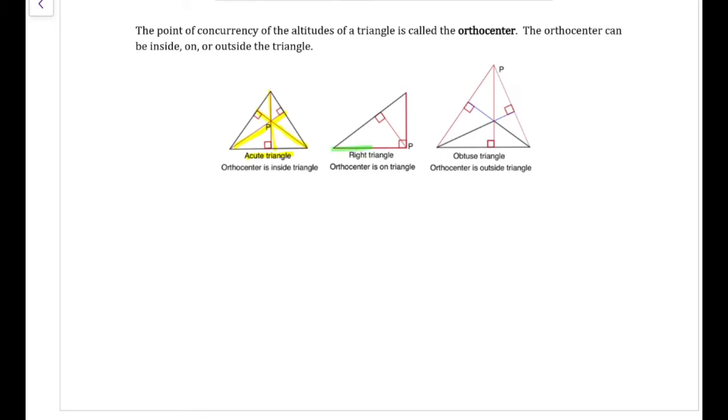Acute triangles, all of their orthocenters are on the inside of the triangle. Right triangles, orthocenters are on the triangle. And obtuse triangles, the orthocenter is outside of the triangle.